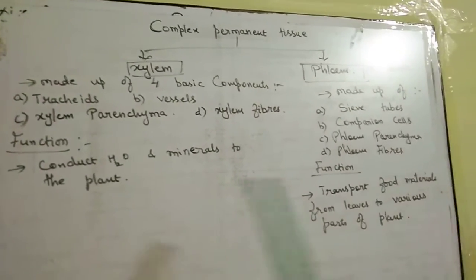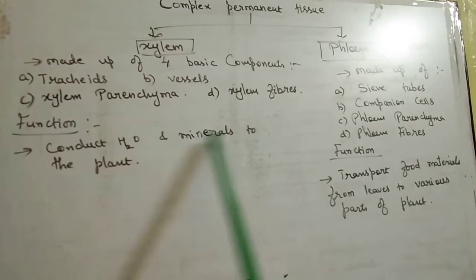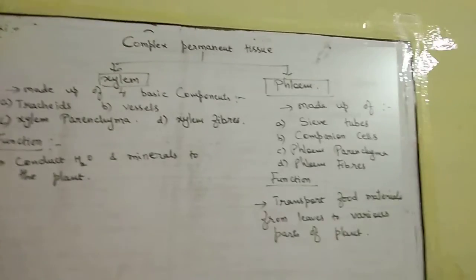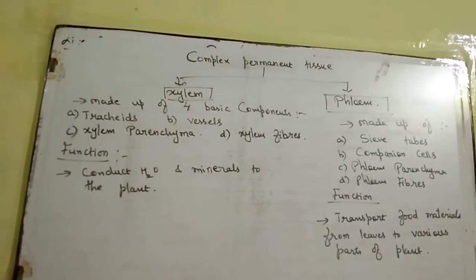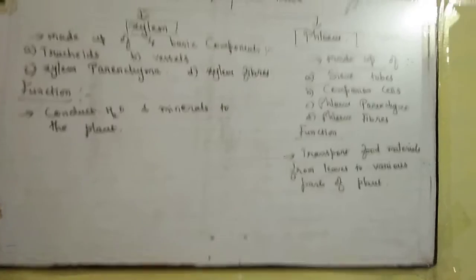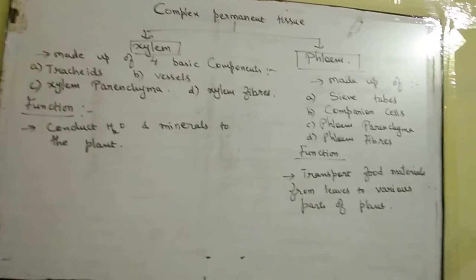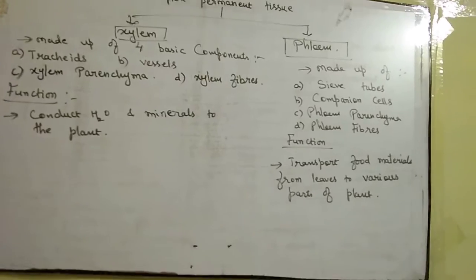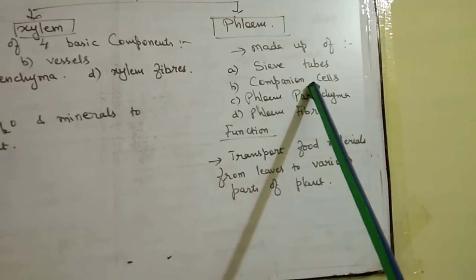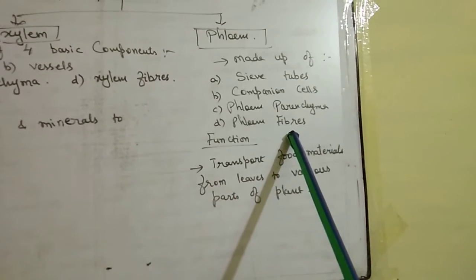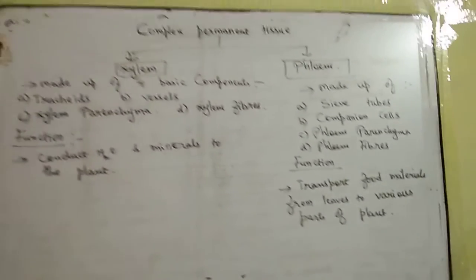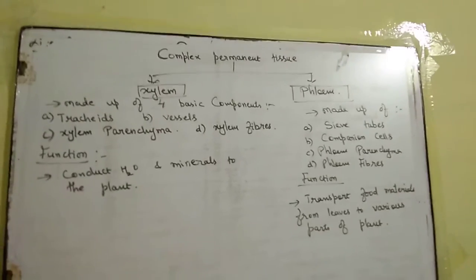The function of xylem is to conduct water and minerals to the plant. You will study this in more detail in 10th class. Phloem consists of phloem parenchyma and phloem fibers, and its main function is to transport food material from leaves to various parts of the plant. This concludes the topic of complex permanent tissue.